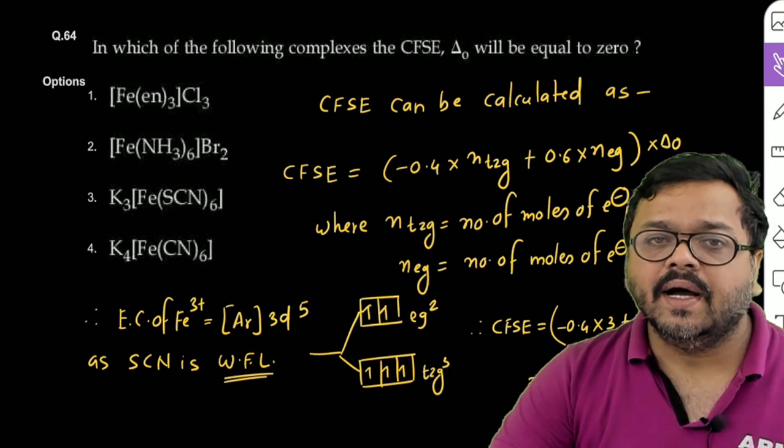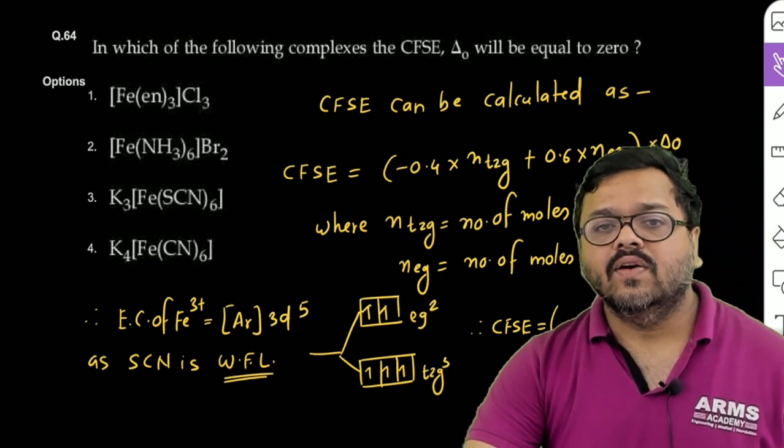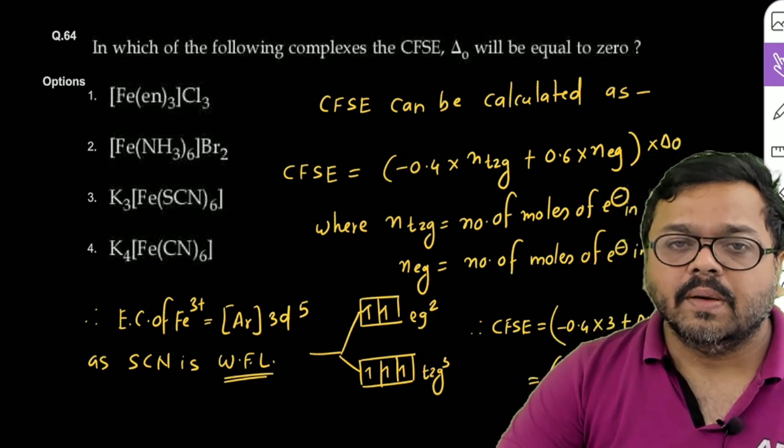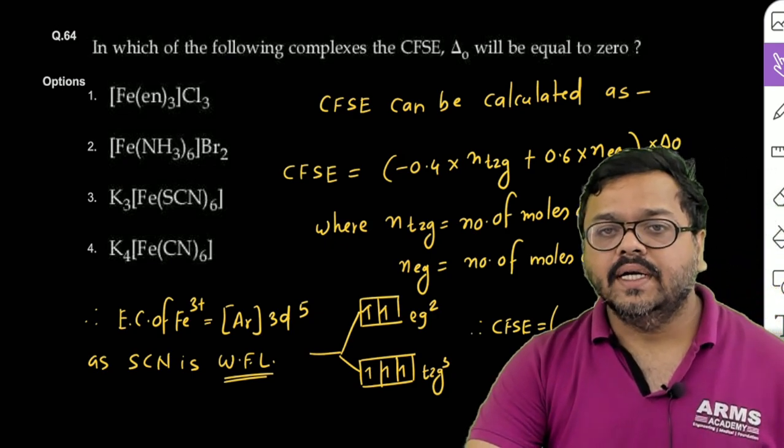to third option mein jo complex hai, woh hai Fe, aur Fe ki oxidation state hai plus 3. To agar dekha, to electronic configuration of Fe3+ is argon completed 3D5.